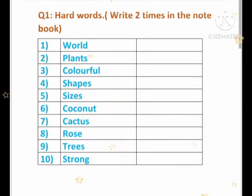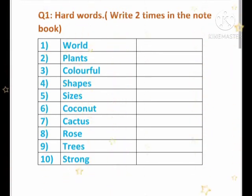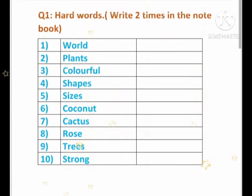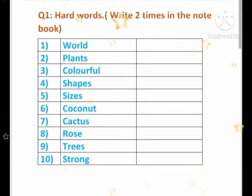Six: coconut. Seven: cactus. Eight: rose. Nine: trees. Ten: strong.